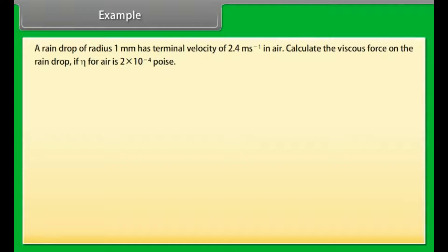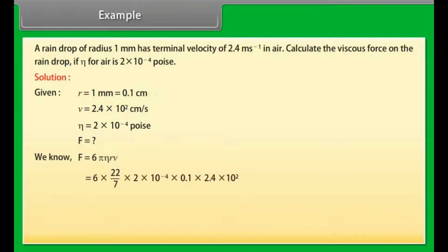Example. Let's take an example on Stokes law. A raindrop of radius 1 mm has terminal velocity of 2.4 m/s in air. Calculate the viscous force on the raindrop if η for air is 2 × 10⁻⁴ poise. Given values: R = 1 mm = 0.1 cm, V = 2.4 × 10² cm/s, η = 2 × 10⁻⁴ poise. We know that F = 6πηRV. Putting their respective values in the above equation, on calculating we get F = 9.05 × 10⁻² dyne = 0.091 dyne. Hence the viscous force on air drop is 0.091 dyne.